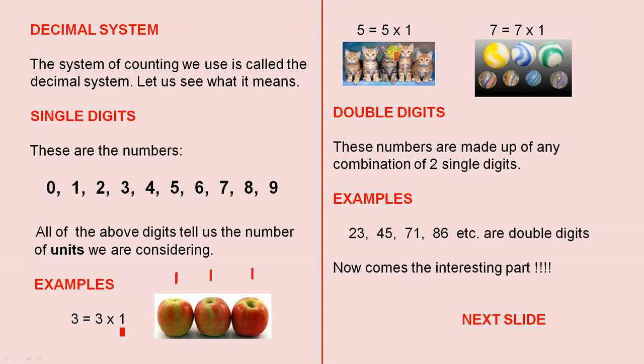The little kittens, there are 5 of them. Each little kitten is a unit, so 5 times 1 gives us 5. The marbles, there are 7 of them. Each of the marbles is a single unit. 7 times 1 gives us 7.